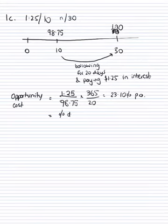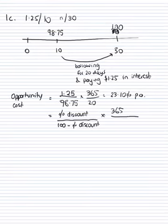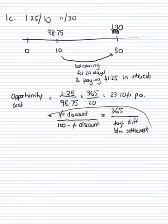The formula is the percentage discount divided by 100 minus the percentage discount, multiplied by 365 over the days' difference between early and late settlement. So that formula is just what I applied using intuition.